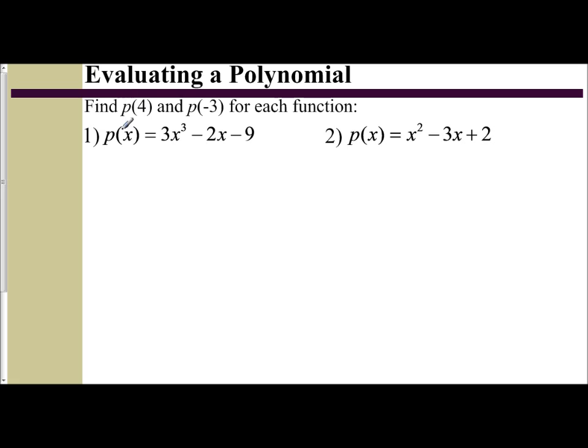So we're told here P(x) equals 3x³ minus 2x minus 9, and we want to find P(4) and P(-3). And this is written in our function notation.